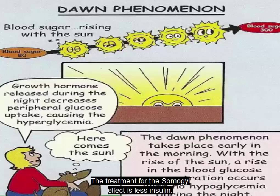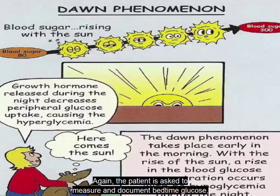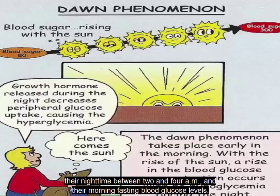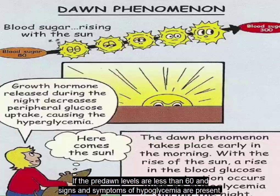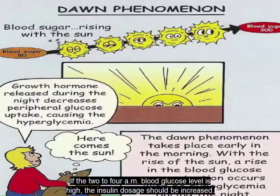The treatment for the Somogyi effect is less insulin. The treatment for the dawn phenomenon is an increase in insulin or an adjustment in administration time. The patient is asked to measure and document bedtime glucose, nighttime glucose between 2 and 4 a.m., and morning fasting blood glucose levels. If pre-dawn levels are less than 60 and signs of hypoglycemia are present, the insulin dosage should be reduced. If the 2 to 4 a.m. blood glucose level is high, the insulin dosage should be increased. The patient should also be counseled on appropriate bedtime snacks.